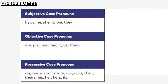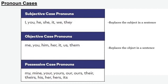So we've reviewed pronouns and antecedents. We are now going to review the different cases of pronouns. This should be familiar because it's from our first lesson with pronouns. Remember that pronouns have three different cases: the subjective case, which replaces the subject in a sentence; the objective case, which replaces the object in a sentence; and the possessive case, which shows ownership of something.